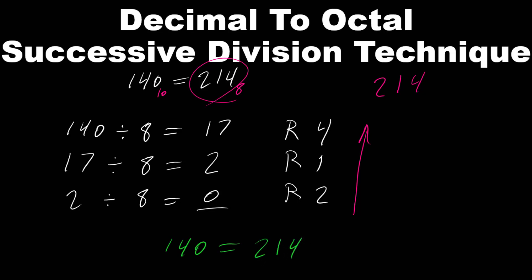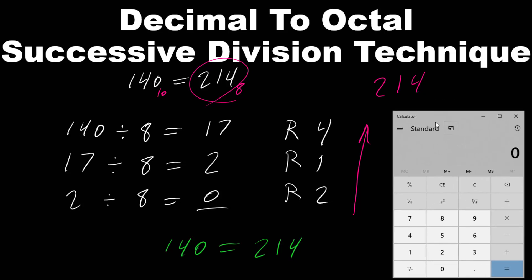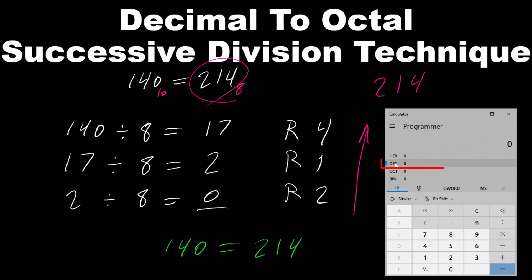Now let's take a look using the calculator. We want to change the view from standard view to programmer view. Decimal is already selected, so our decimal number 140. Let's enter 140. And here we can see for the octal number 214.